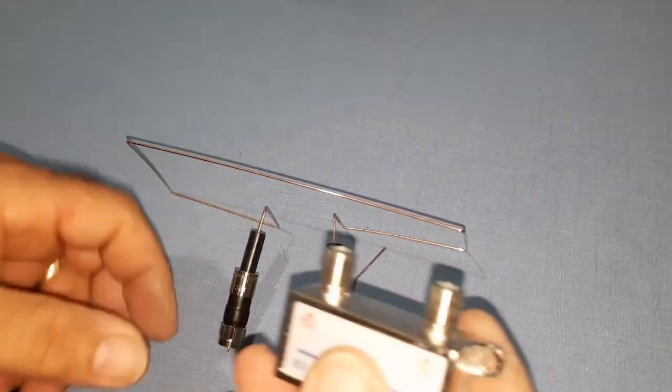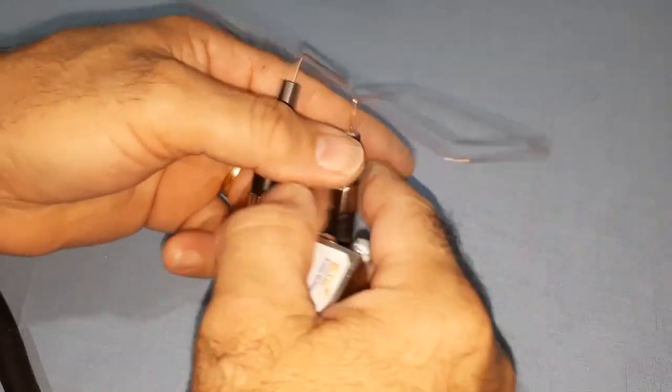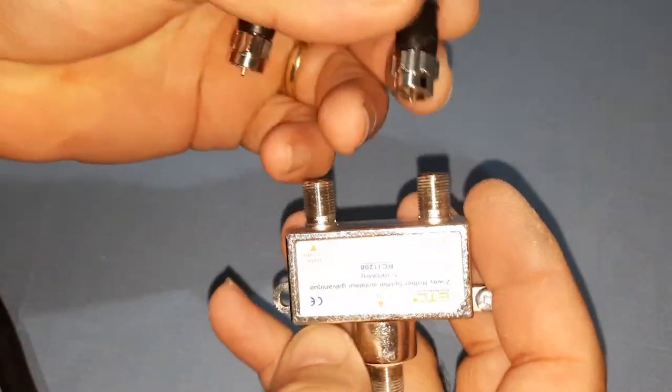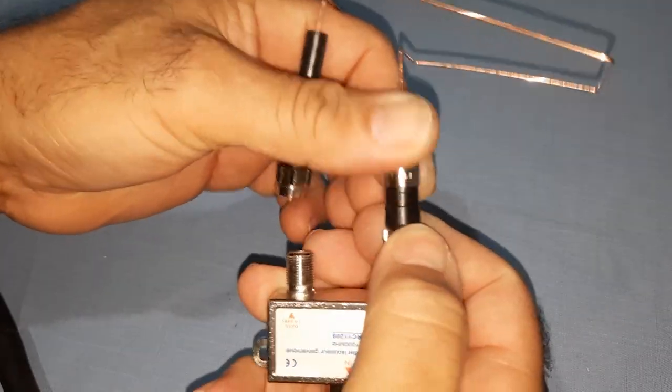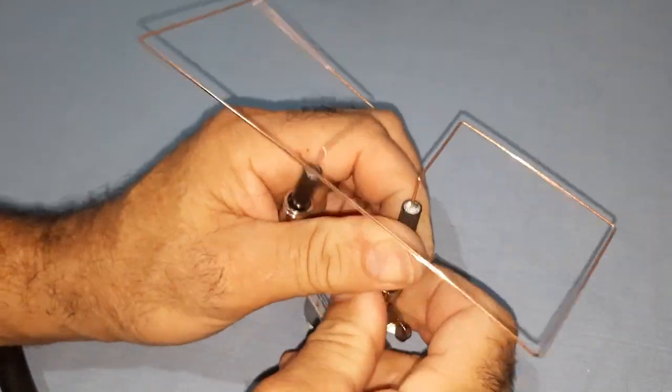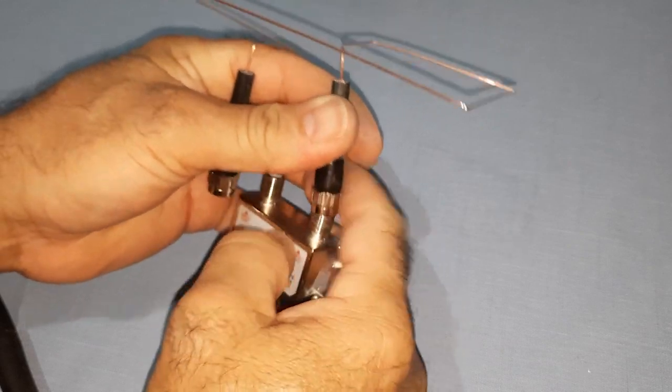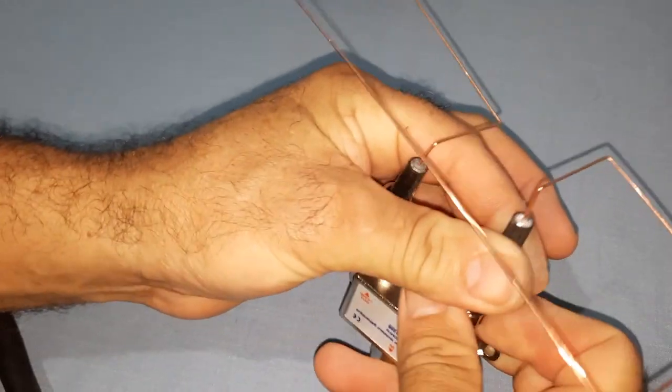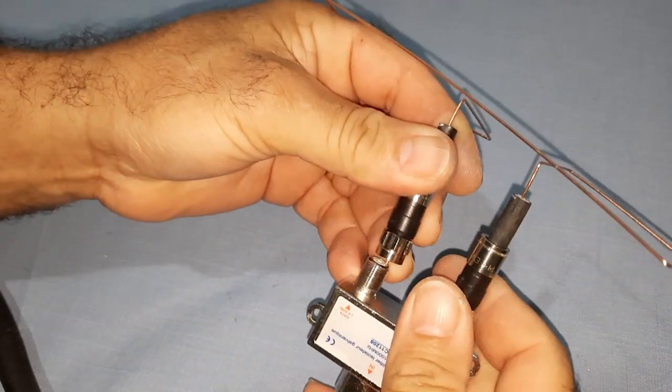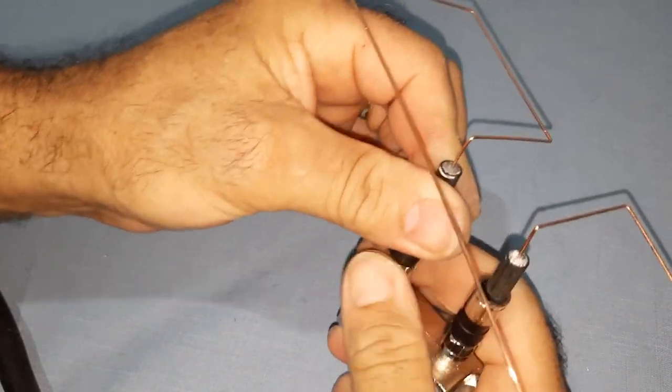Make sure to have a splitter with one input and two outputs. This device will allow you to distribute the signal from your antenna to two different destinations. Connect the end of your antenna to the splitter. Take the end of your antenna, the side opposite to the F-type connectors, and connect it to the input of the splitter. Ensure to screw the F-type connector correctly into the input of the splitter.